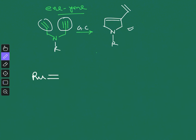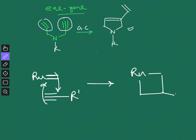For the enyne metathesis mechanism, we use the ruthenium carbene complex as the starting catalyst — though actually the reaction starts with the phenyl substituent, we begin from this point. In the first step, your alkyne reacts with the ruthenium carbene via cycloaddition, giving a new intermediate with a double bond character.